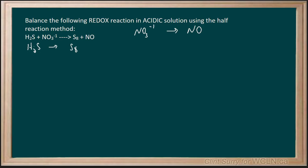Starting with the one on the left, I'm going to balance my main element first. Now we see there's eight sulfur on the right and only one on the left, so I'm going to multiply that one by eight. That balances my main element.